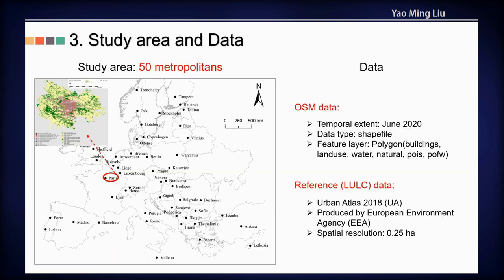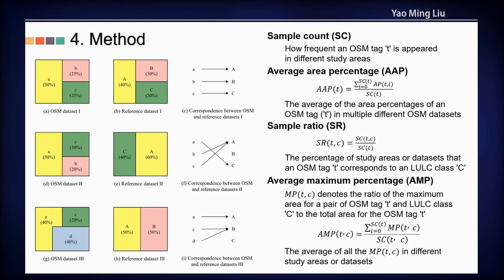Our study area includes 50 Pan-European metropolitans, and the reference data is Urban Atlas. For each study area, all the OSM tags are intersected with different land use land cover classes, and the class with the maximum intersecting area is viewed as the most appropriate class for that OSM tag. Besides, four measures are designed to describe the dictionary.